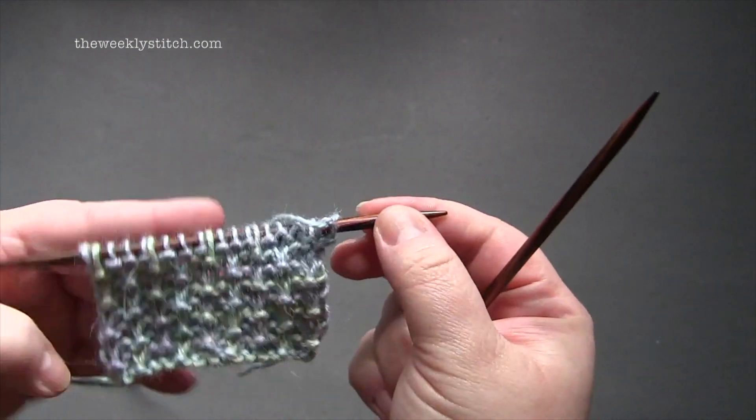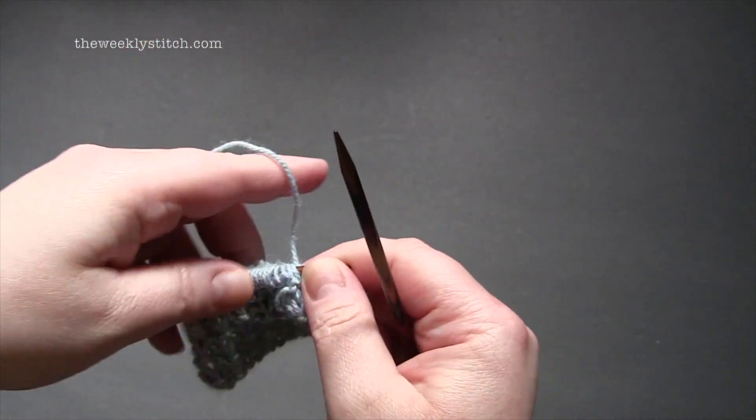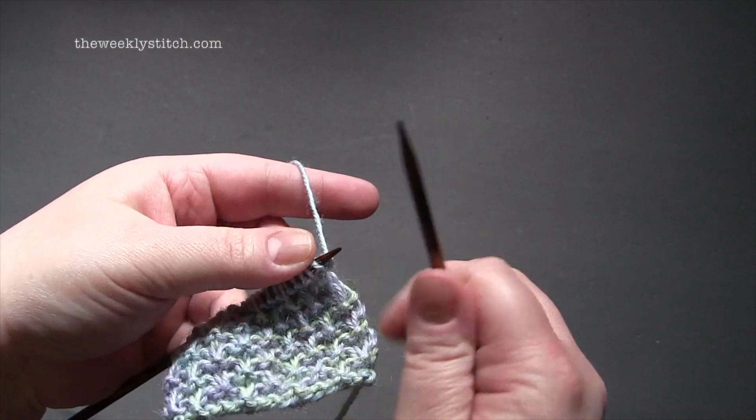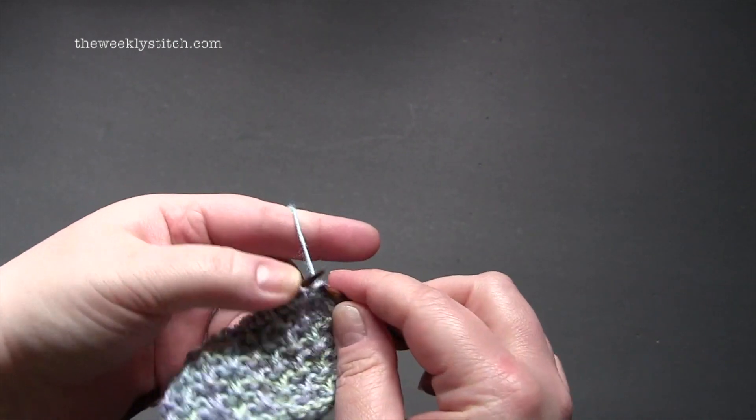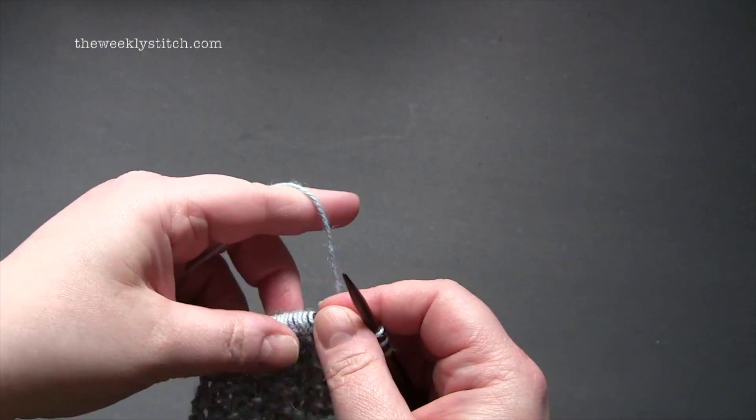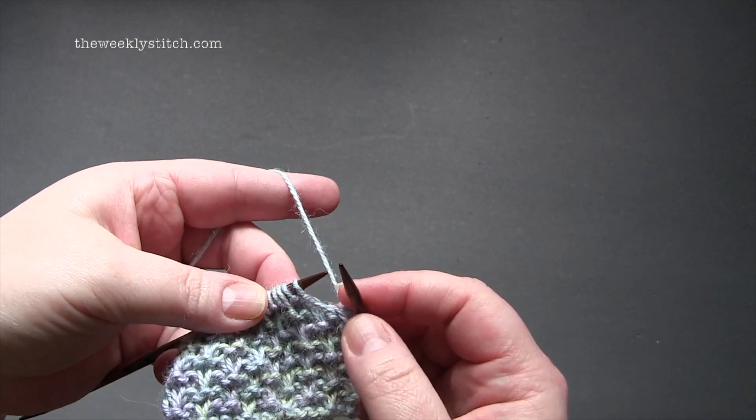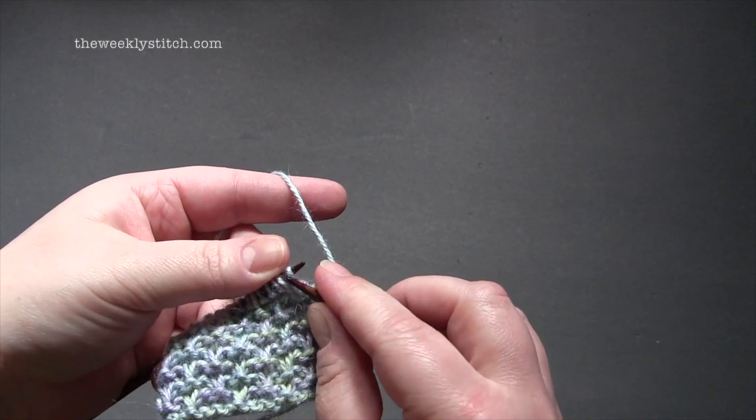For row one, which is the right side of the work, you're going to start by knitting the first three stitches and then the repeat is slip one with the yarn in back, knit three.